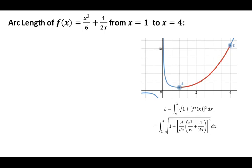We can write this in a slightly different format — the length is this integral where instead of f prime of x, I've substituted in the formula for f(x) and I'm looking for the derivative of it. Finding the derivative is not too hard. I'm going to change 1/(2x) to (1/2)x to the negative 1, because that's a little easier to differentiate. We end up with x²/2 minus 1/(2x²) using the basic power rule.